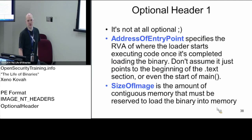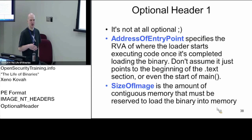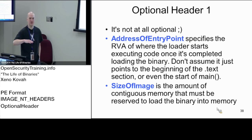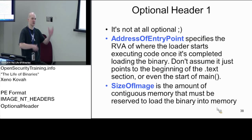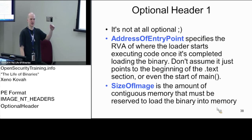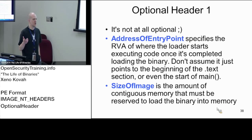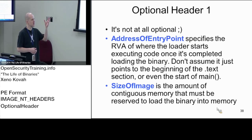Next we're going to talk about the address of entry point. This is an RVA — a relative virtual address, not an absolute address. It's a relative address into the file where the first bit of code is that's going to run in this executable. The header is telling the OS loader: once you're done setting everything up and mapping everything into memory, jump to this location and start executing code. If you're debugging malware and don't know where the code is, you can go to the address of entry point and set a breakpoint there — you'll catch it before it runs any code.